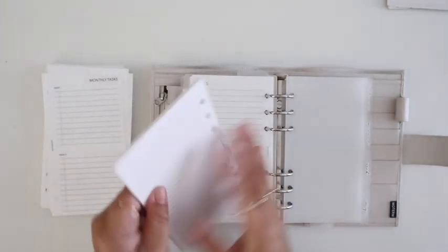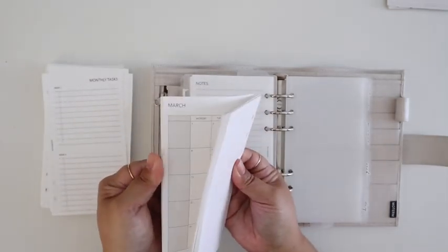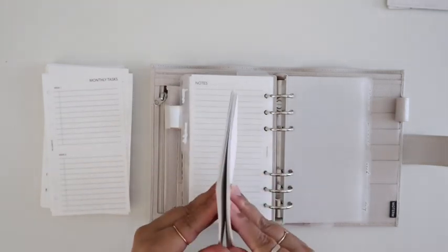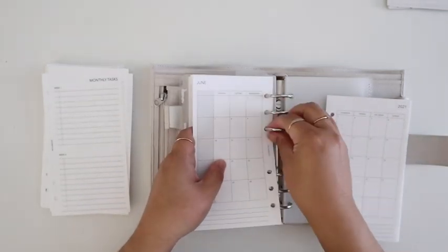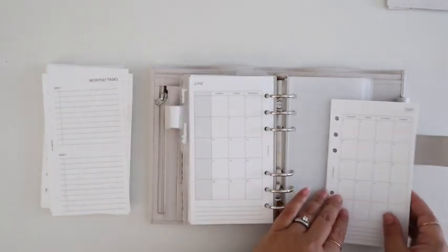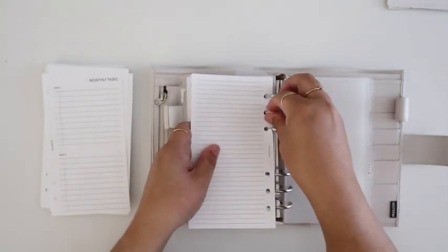In my month divider, I add all my monthly inserts, January through December. I keep a full year of inserts in my planner at all times. And then luckily, I just opened up to the June there. That was by luck.